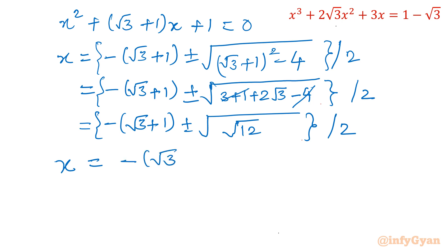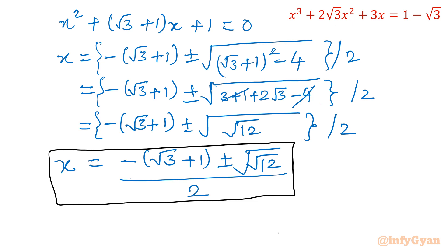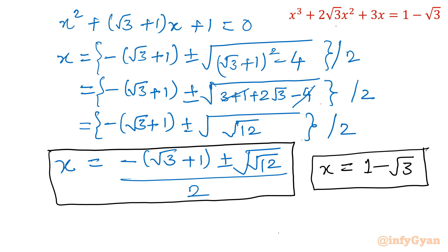So the two solutions from the quadratic are x = [−(√3 + 1) ± √12] / 2. Combined with the first solution x = 1 − √3, we have all three solutions to the original cubic equation.